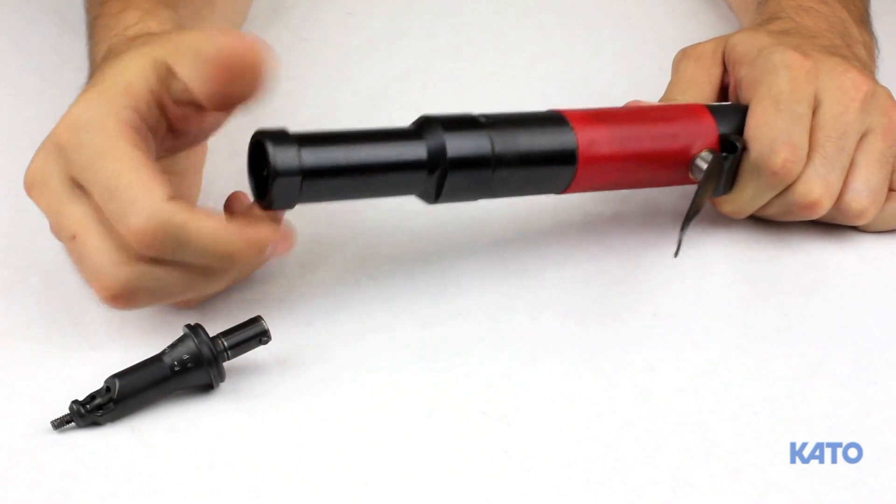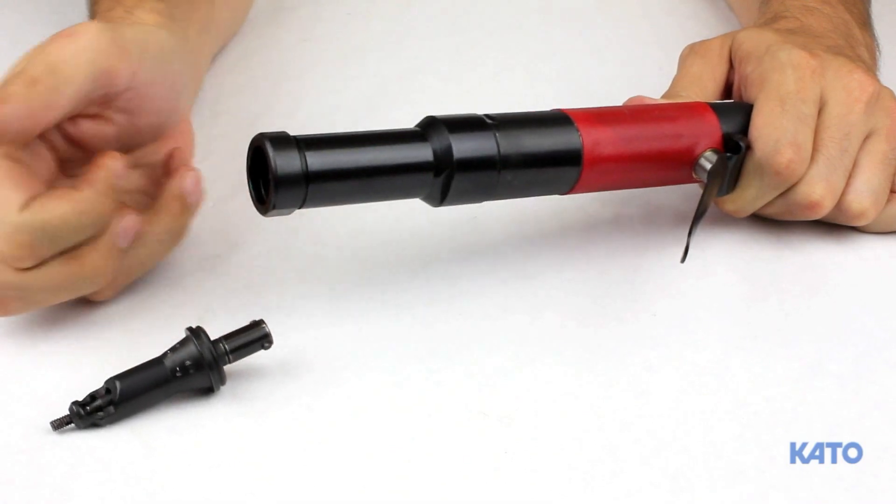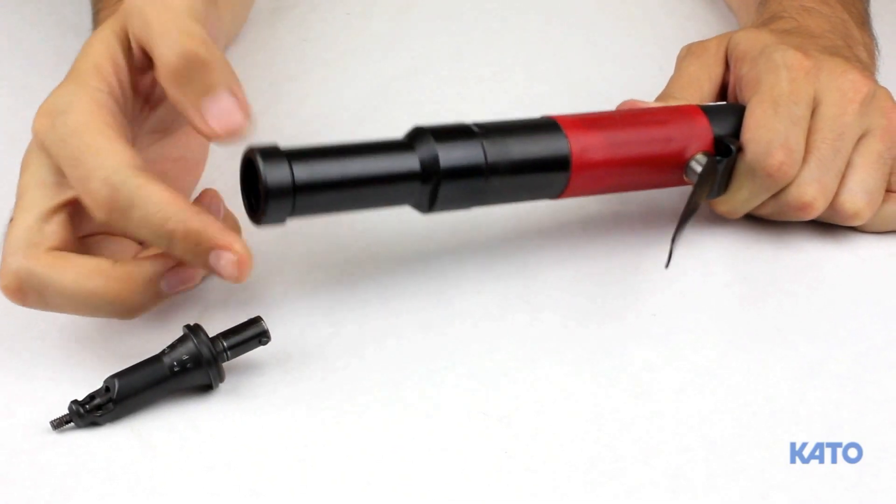At the front of the adapter is a lock nut. Turn clockwise to loosen it. Turn counter clockwise to tighten it.